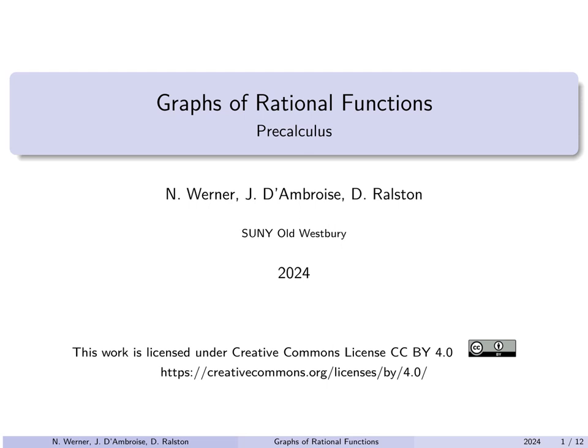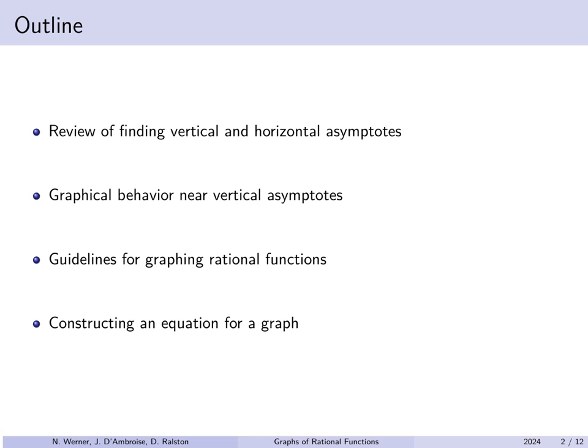In this lecture we'll discuss graphs of rational functions. We'll do a brief review of how to find vertical and horizontal asymptotes of a rational function, then discuss what the graph of a rational function looks like near vertical asymptotes, present a few guidelines for drawing reasonably accurate graphs by hand, and go in reverse — given a graph of a rational function, can we come up with a reasonable guess as to what the function should have been?